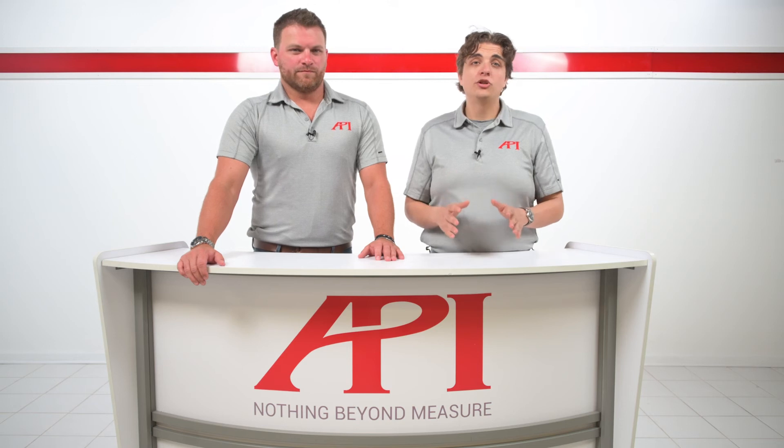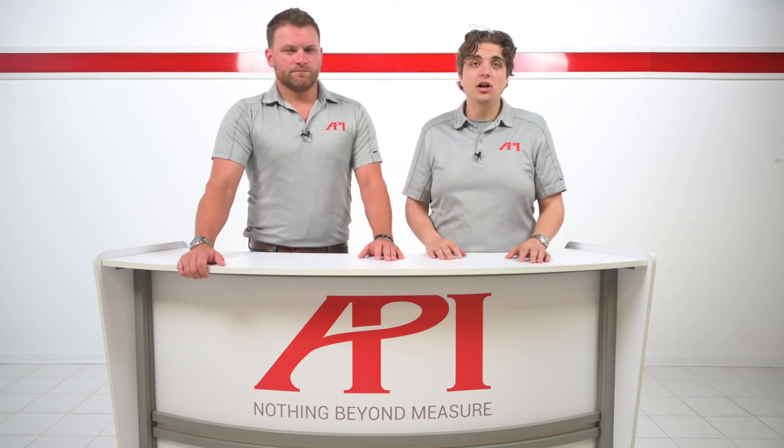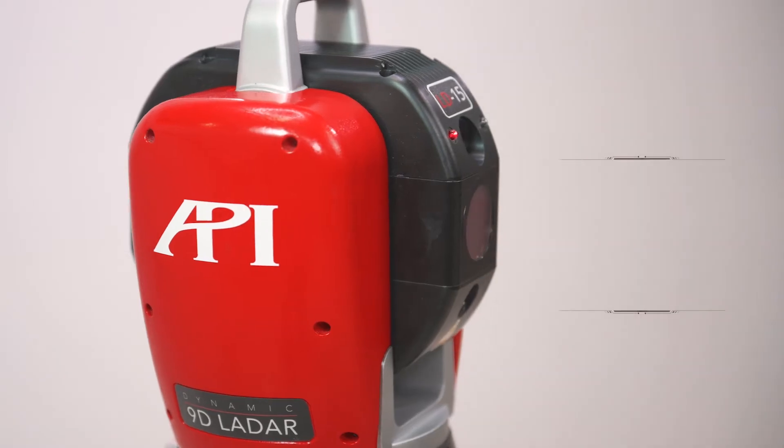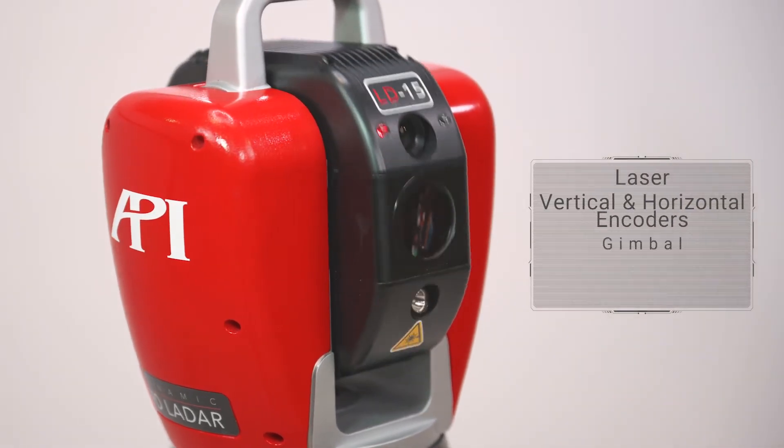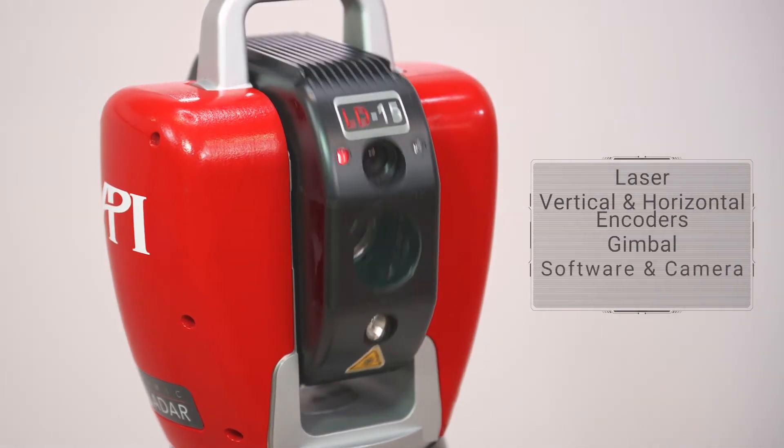To perform these measurements, Dynamic 9D LADAR relies on four main components: the laser, the vertical and horizontal encoders, the gimbal, and the software and camera combination.